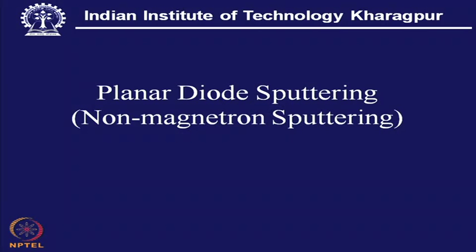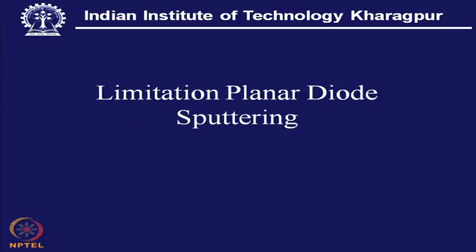That is why it is now called non-magnetron sputtering — meaning there will be a magnetron — and that is exactly what we call magnetron sputtering. Now, what are the limitations of planar diode sputtering and why should one go for magnetron sputtering?